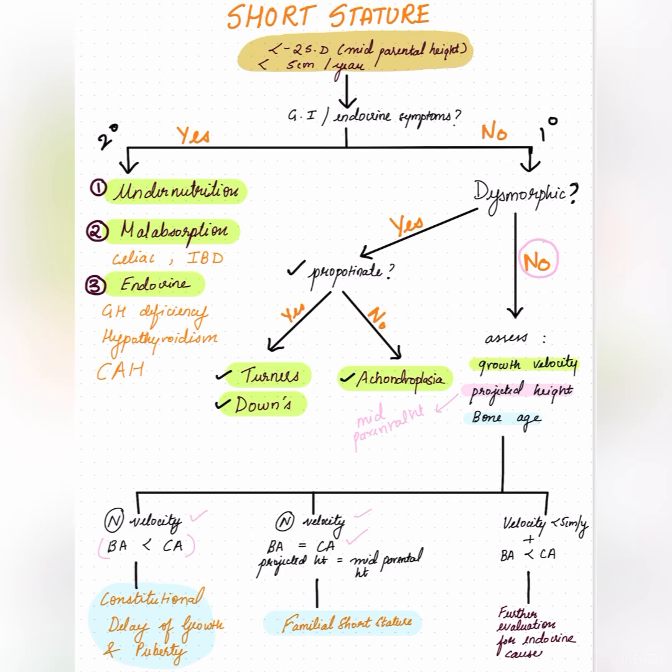If the growth velocity is low and bone age is less than the chronological age, you need to further evaluate for endocrine or secondary causes of short stature.